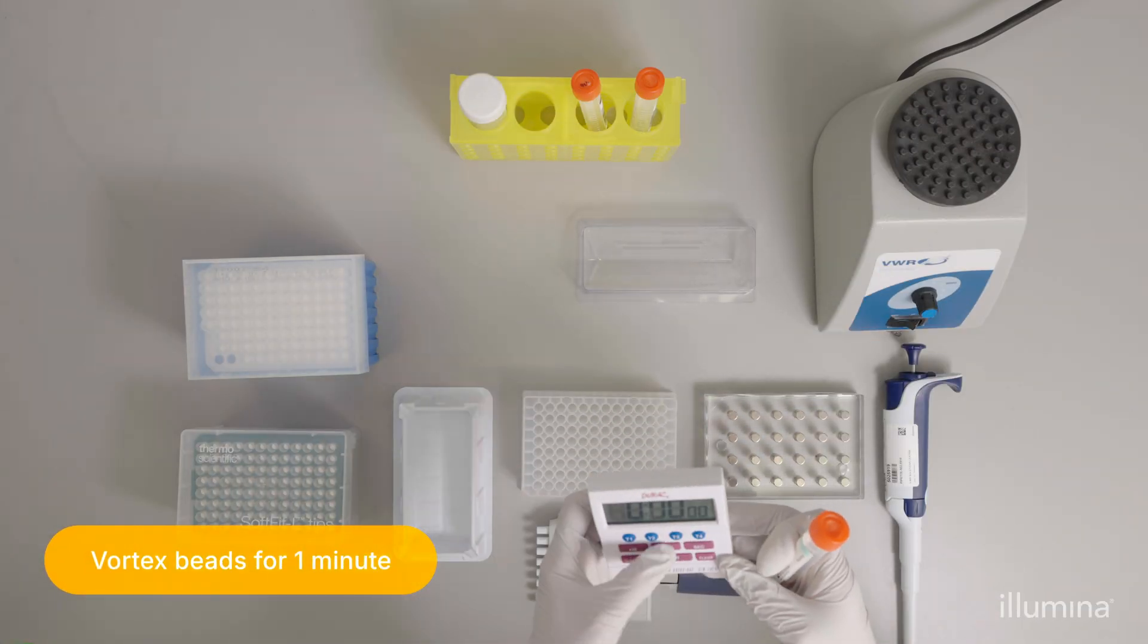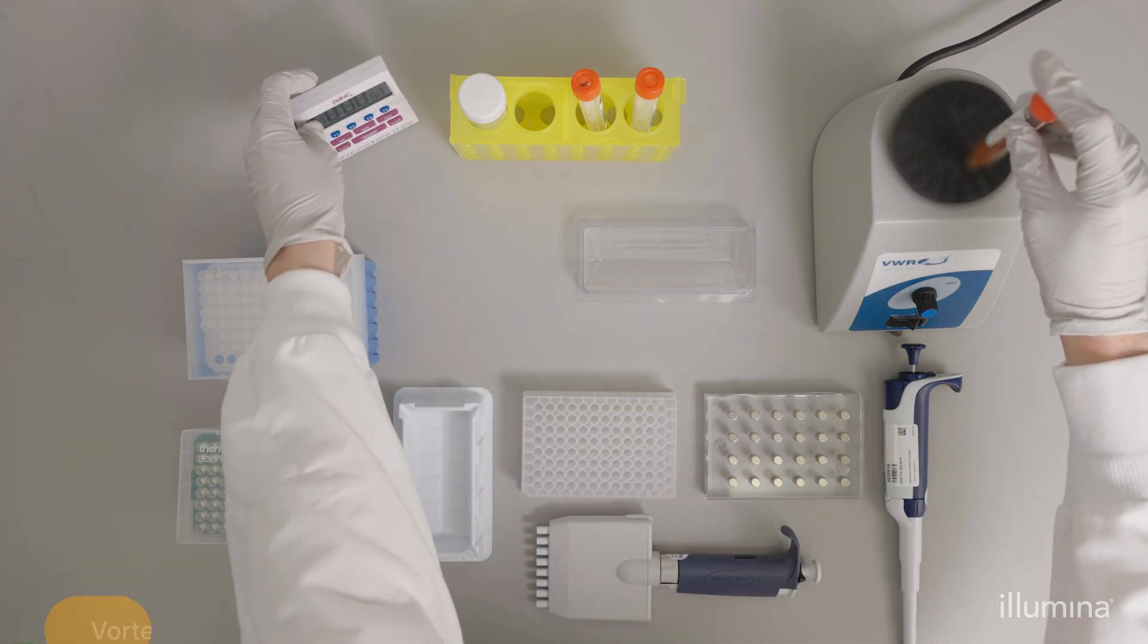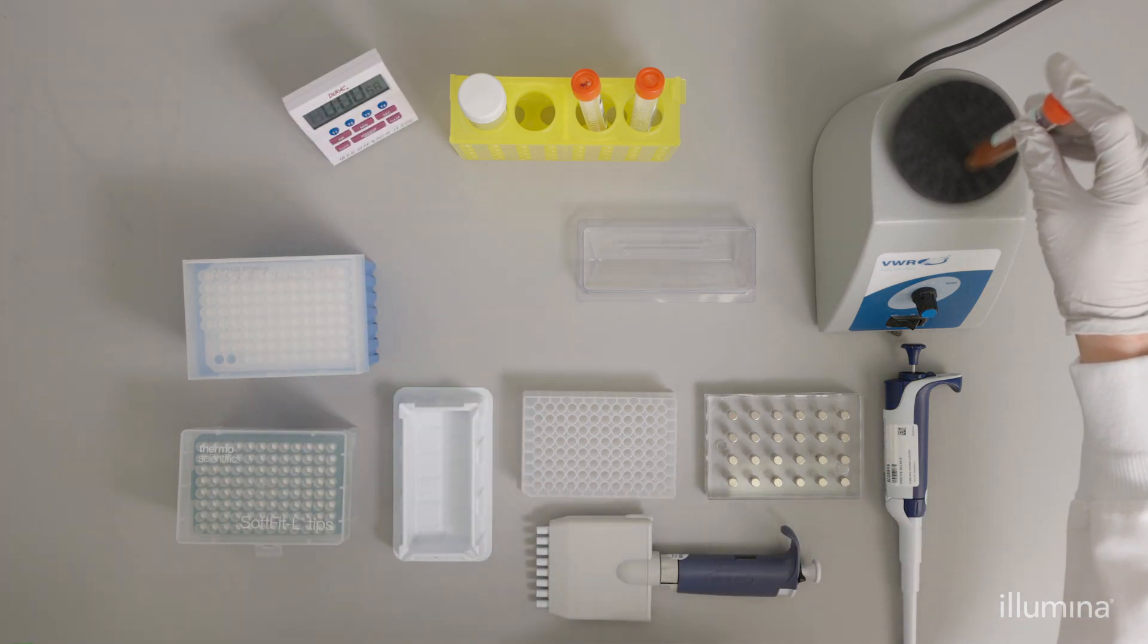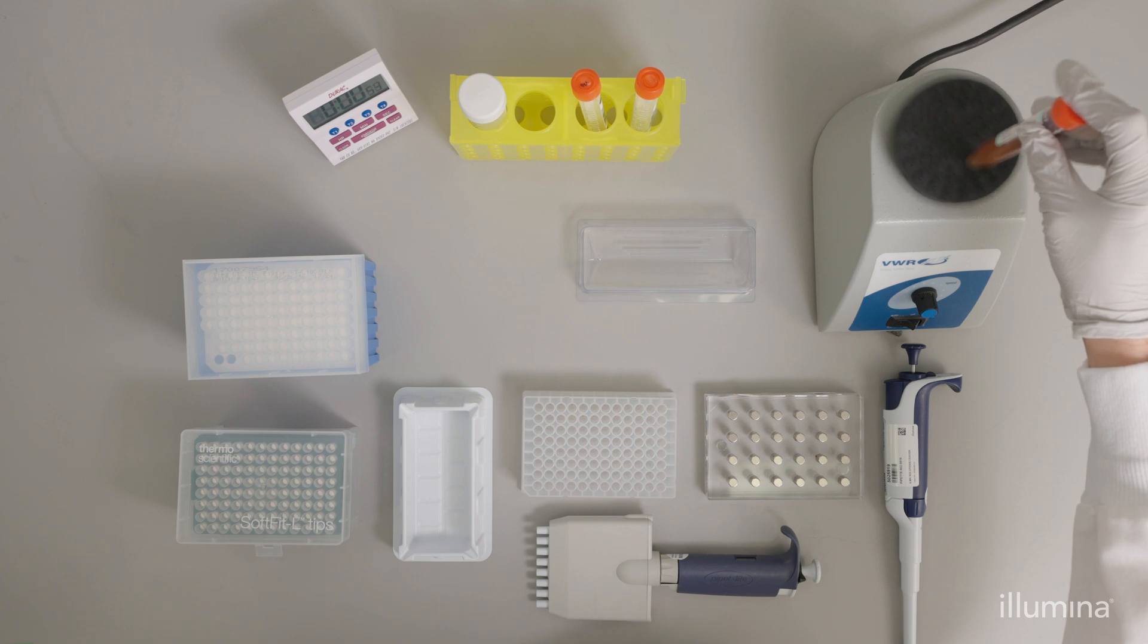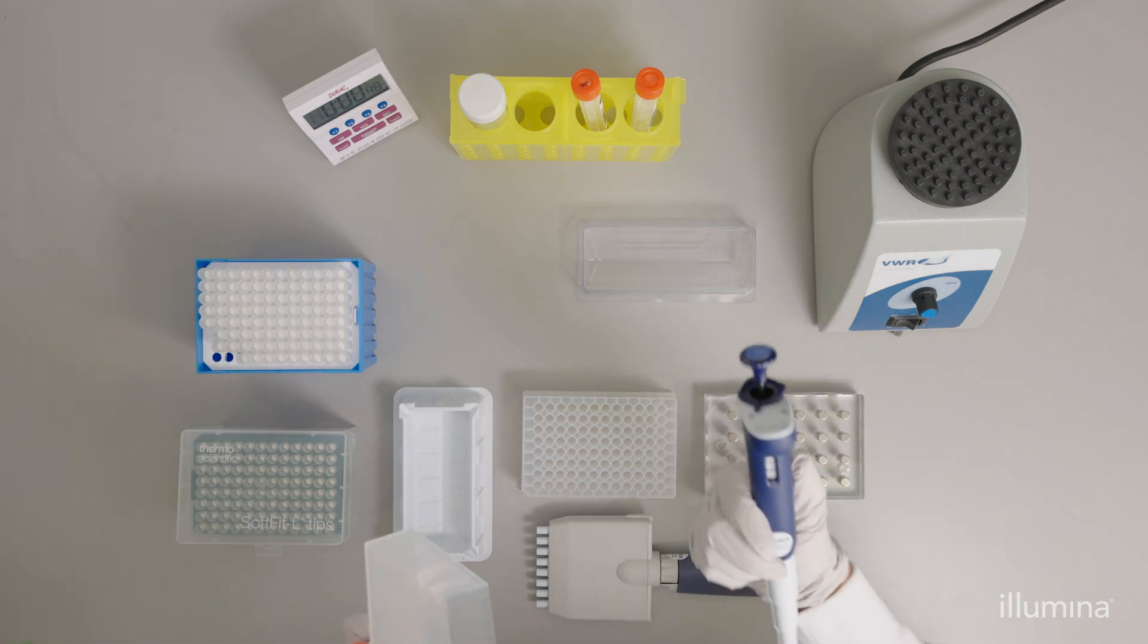When using sample purification beads, or SPB, in this protocol, vortex the tube for one minute to resuspend beads in the solution. Immediately add beads to a trough with a 1000 microliter pipette.